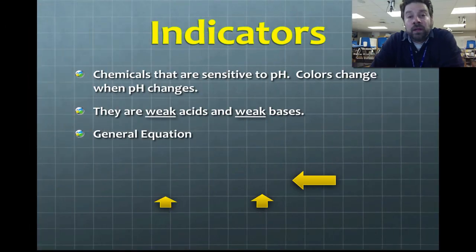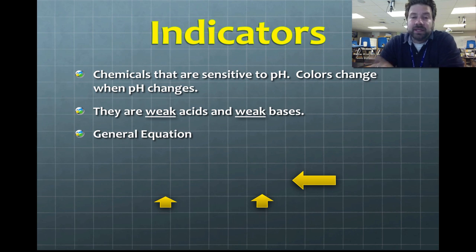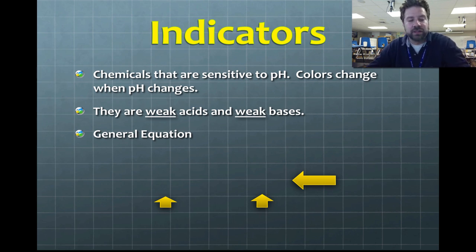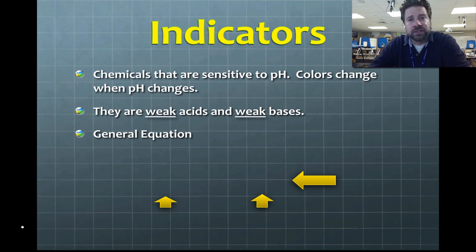Today's talk is going to be about titrations, but to get there we need to make a pit stop first and talk about indicators. Indicators are chemicals that are sensitive to pH — their colors change when pH changes.